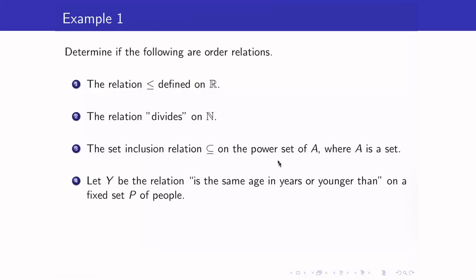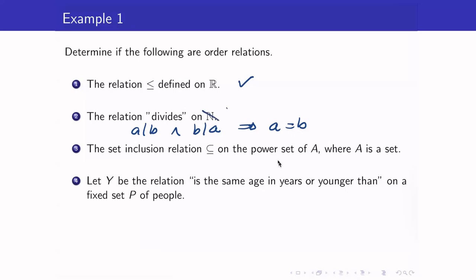Let's check whether the following are partial order relations. For the first one, is the relation less than or equal to anti-symmetric? Yes, this is anti-symmetric. For relation 2, the relation divides on N: when A divides B and B divides A, does it mean A equals B? Yes, this is true because our set is N. However, if we change this to the set of integers, this will no longer be true.